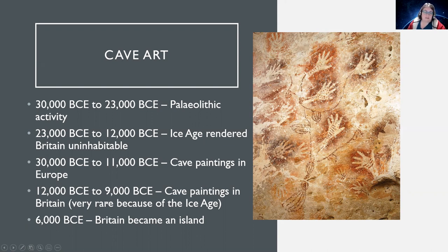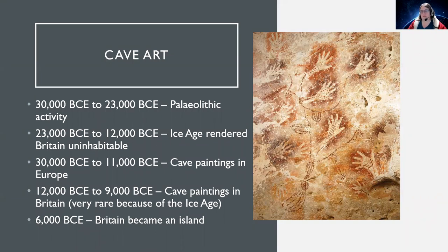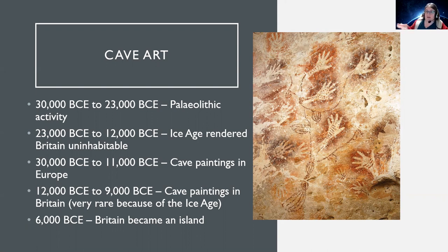Between 12,000 and 9,000 BCE there were some cave paintings in Britain, but they were extremely rare due to the ice age. The two known examples are Creswell Crags in Derbyshire and Cheddar Gorge cave. Around 6,000 BCE Britain became an island, cut off from the mainland by rising meltwater as the ice age ended. It's unclear whether this was a gradual inundation of low-lying areas like Doggerland or a sudden one — perhaps a combination of the two.